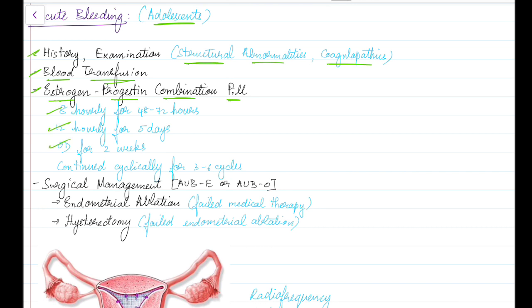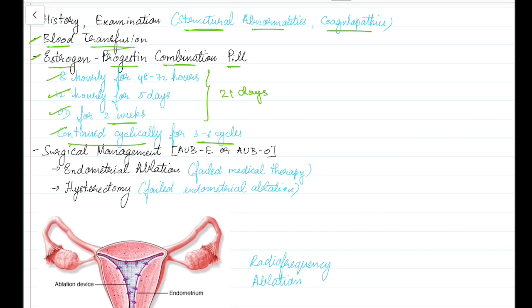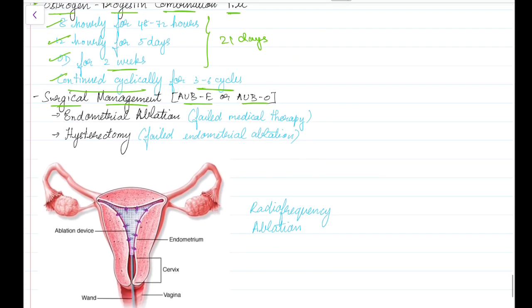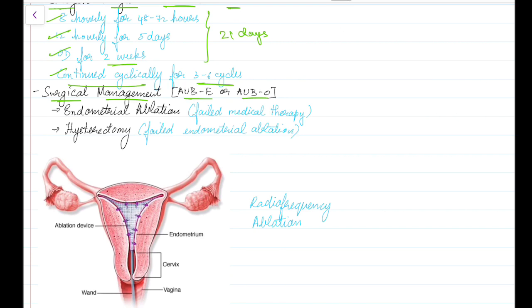After that, the estrogen-progestin combination pill is given once daily for 2 weeks, totaling 21 days, then continued cyclically for 3 to 6 cycles. If medical therapy fails to control the bleeding, surgical management is essential — particularly when abnormal uterine bleeding is due to endometrial or ovulatory causes. The two surgeries that can be performed are endometrial ablation and hysterectomy. Endometrial ablation is done in cases of failed medical therapy; hysterectomy is a radical procedure done only when endometrial ablation fails.